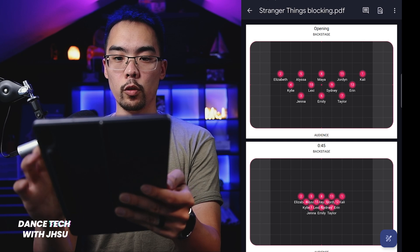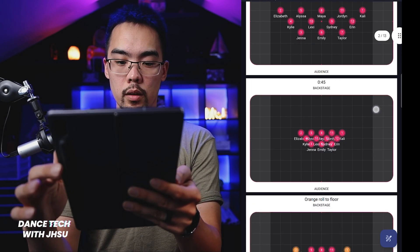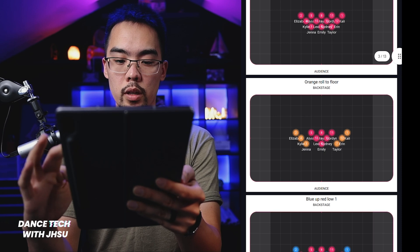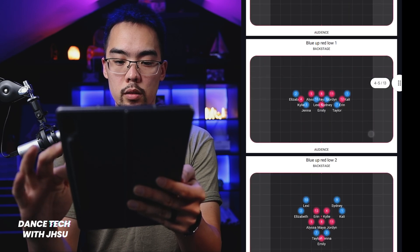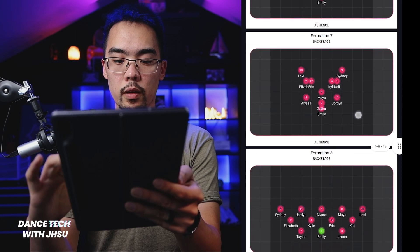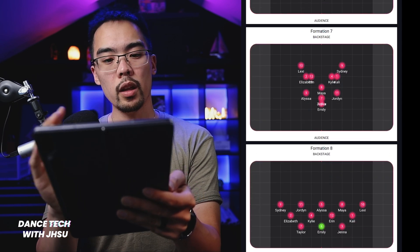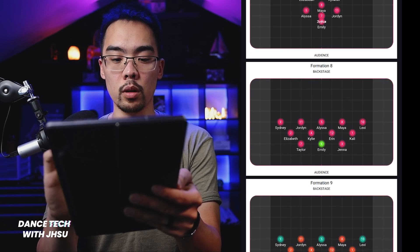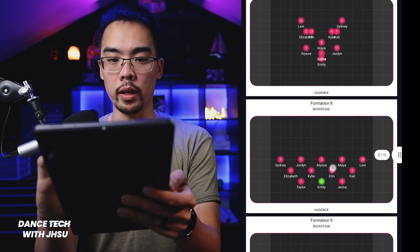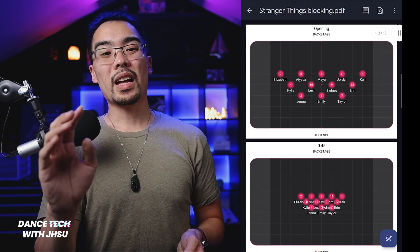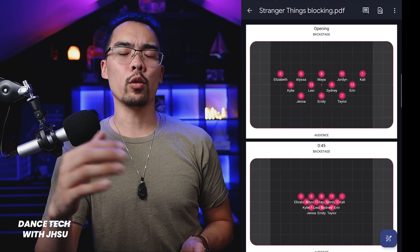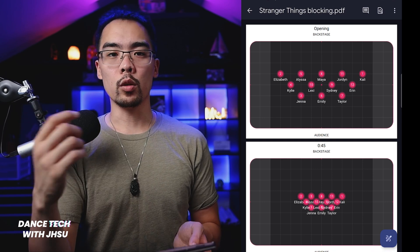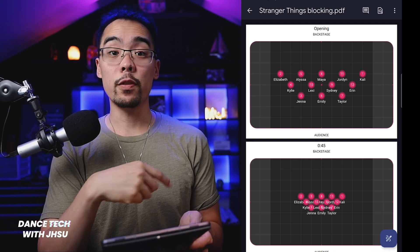If you go to Google Drive, there it is. Click on it and you'll see each formation has the name at the top, and all the names and colors. You'll notice if dancers are too close together the names get a little jumbled, but that's why you have numbers — you can always go back and see whose number is whose. That way, even if it's too tight, you can still tell who's who.